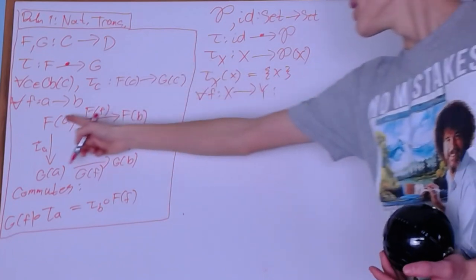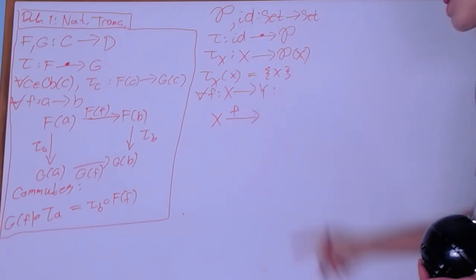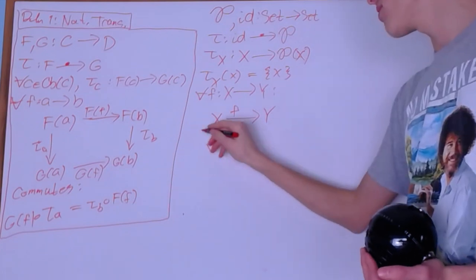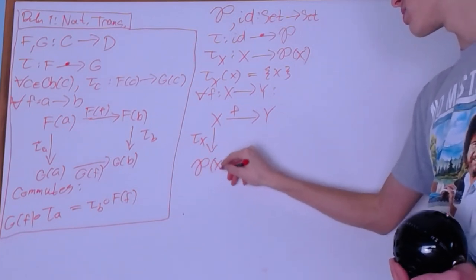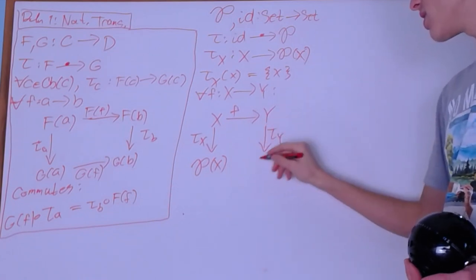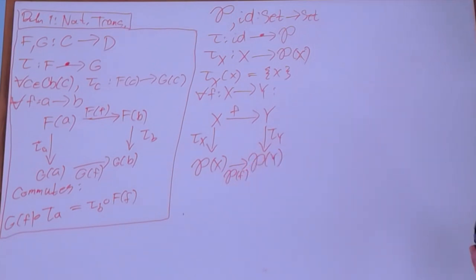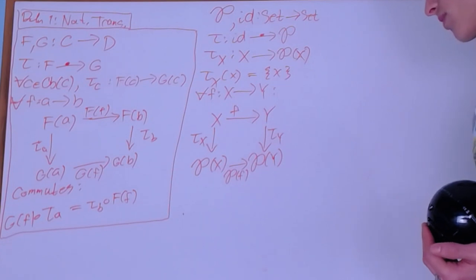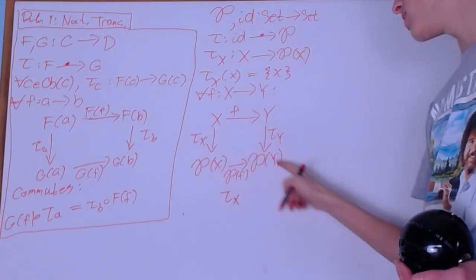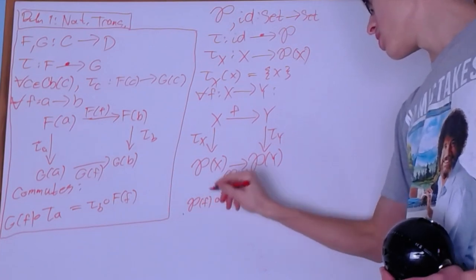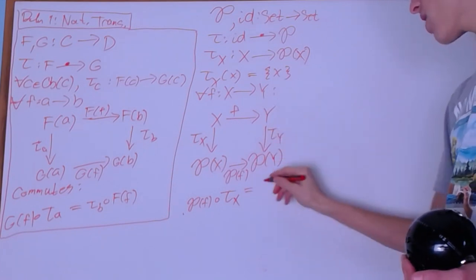We bring X down via tau X to the power set of X, go down via tau Y to the power set of Y, and across via the power set of f. Now we check if this commutative diagram holds. We follow two paths: tau X then power set of f, composed together, must equal f first and then tau Y.